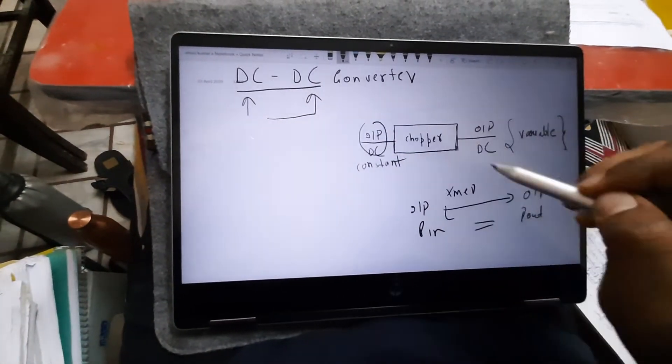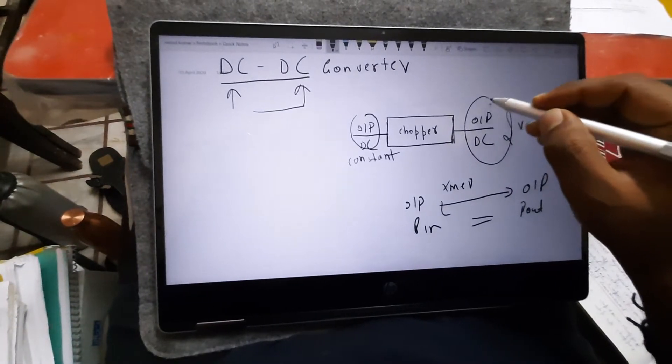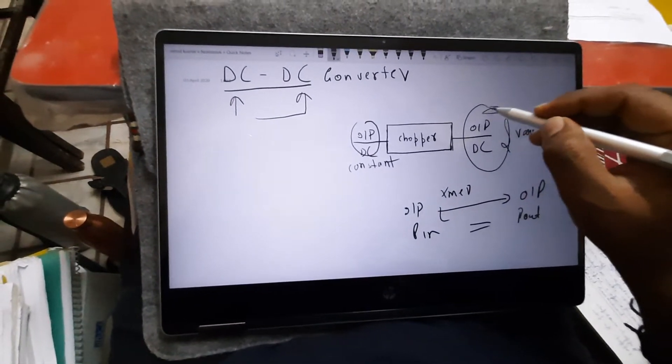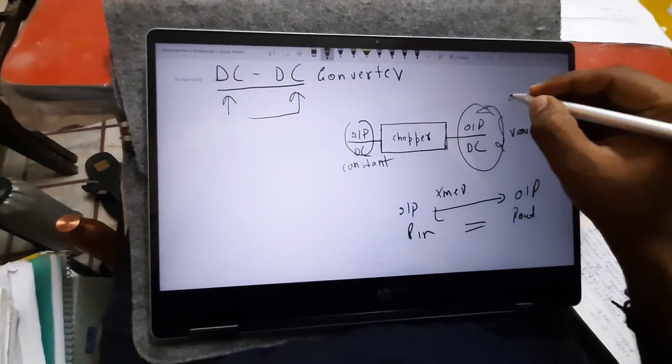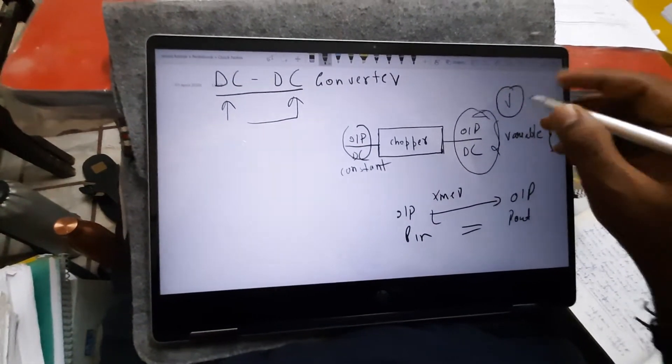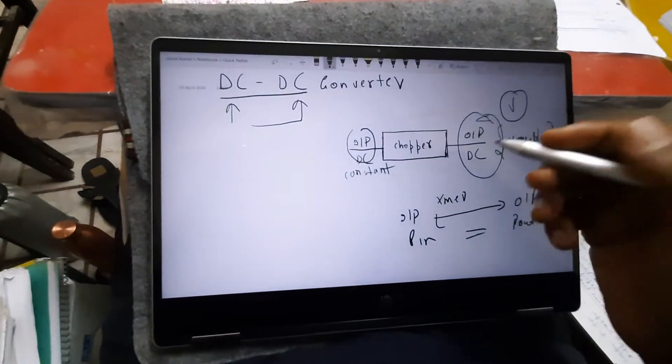for the fixed DC we are getting the variable DC, and this is our main focus. Because for the DC drives to control the speed of DC drives, one of the major factors is the variable voltage. So with the variation of this voltage we can control the speed of DC drive, that is why it is important.